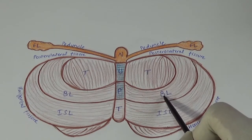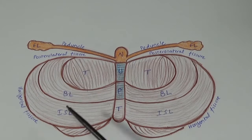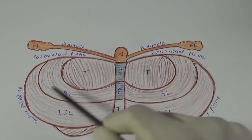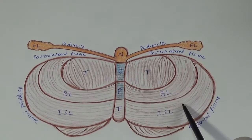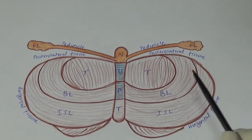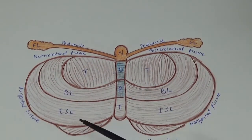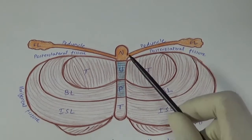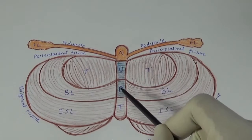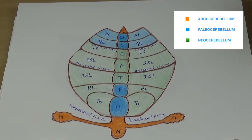Within the corpus cerebelli on the inferior surface, the uvula corresponds to the tonsil in the hemispheres; the pyramid corresponds to the biventral lobule; and the tuber corresponds to the inferior semilunar lobule. The horizontal fissure is also visible here. These diagrams show the anatomical division of the vermal and hemispheric areas.